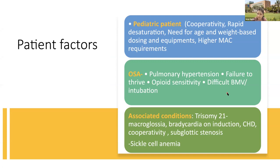OSA children can have pulmonary hypertension, failure to thrive, opioid sensitivity, and difficult bag-mask ventilation and intubation. Associated conditions: adenotonsillectomy is commonly indicated in children with Down syndrome, who have macroglossia and can develop bradycardia on induction, may have congenital heart disease, will not be cooperative, and can have associated subglottic stenosis. Sickle cell anemia is also said to be associated with this condition.